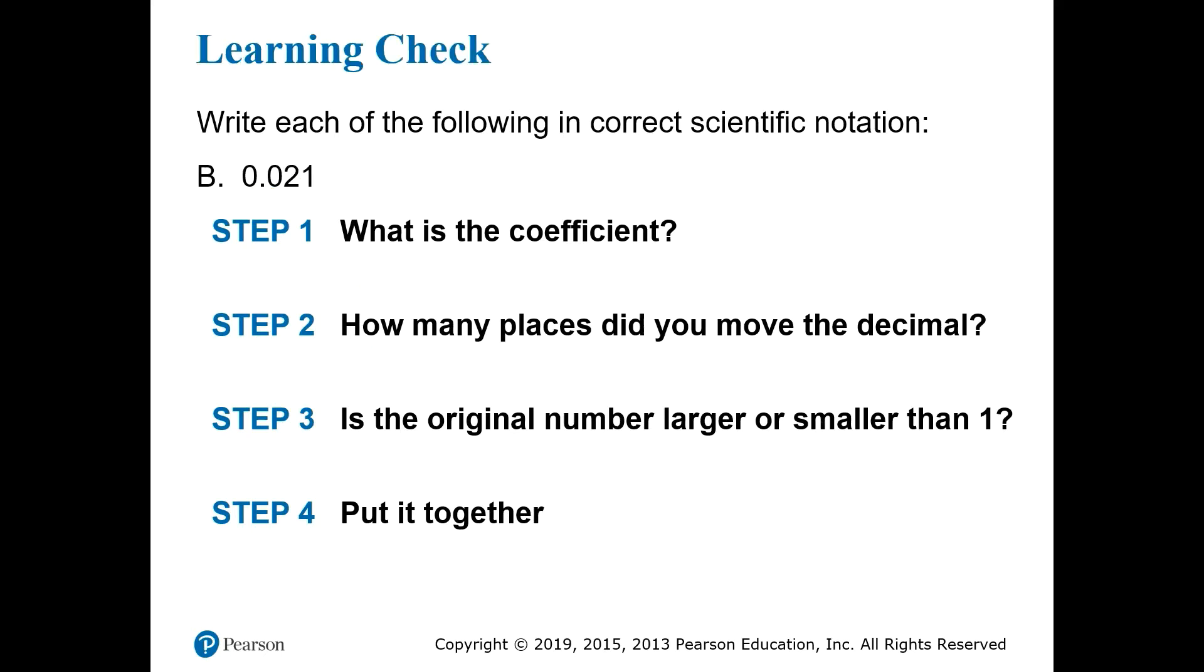How about the next one? 0.021. It's the same process, and we can even look ahead a bit and see that this is a small number, less than 1, so we should already know that the power of 10 will be negative. You can go ahead and move the decimal to after the 2 to get a coefficient of 2.1, and you see that you've moved it two places. So you already know the power must be negative 2. The answer is 2.1 times 10 to the minus 2.